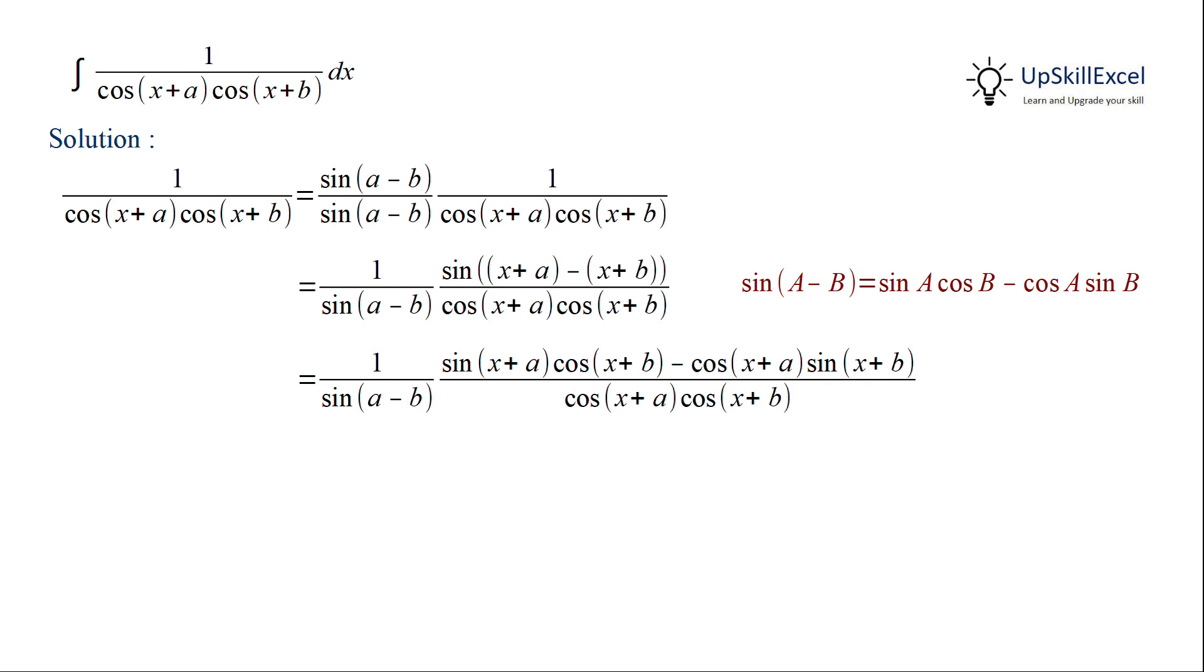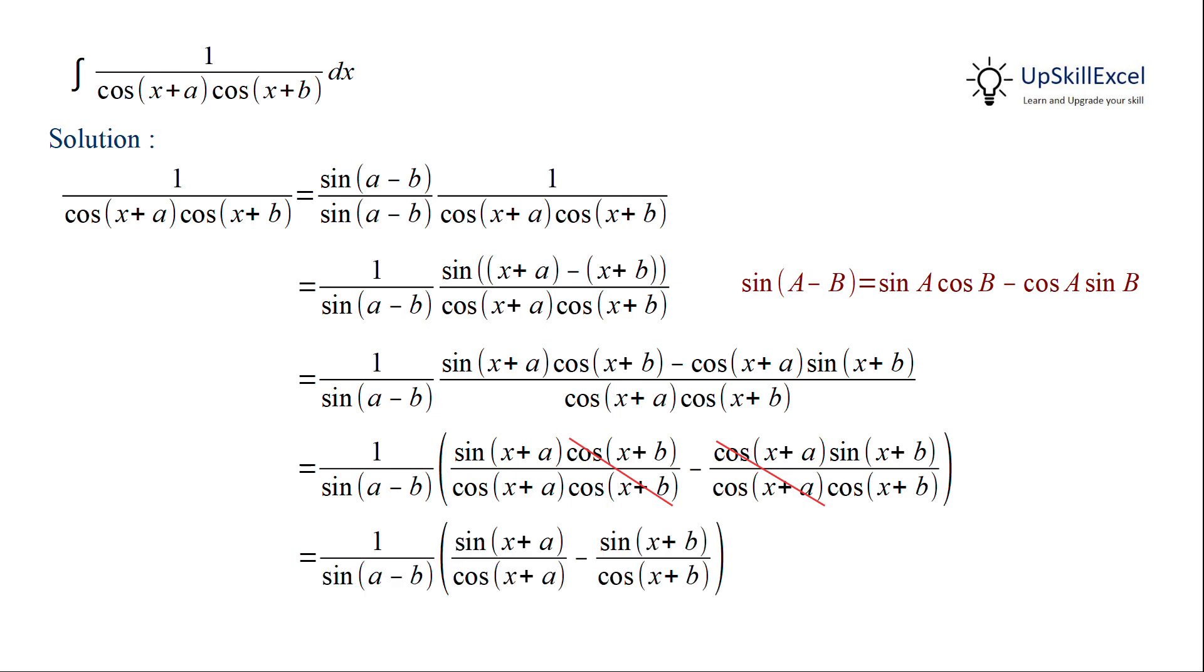Then we can segregate the two terms and we observe that in the first term, cos(x+b) gets cancelled out and in the second term, cos(x+a) gets cancelled out. Giving us 1 over sin(a-b) multiplied by sin(x+a) over cos(x+a) which can be written as tan(x+a) minus sin(x+b) over cos(x+b) which can be written as tan(x+b).